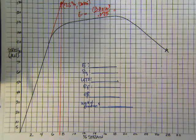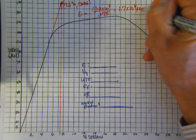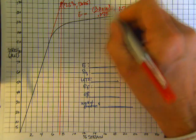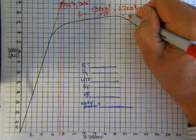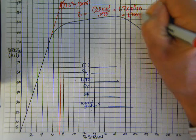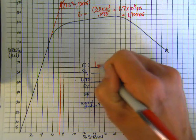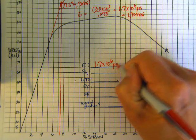And that gives us a value of about 1.7 times 10 to the 6th PSI. Or you could write, if you left this as 130 and left the KSI rather than putting the 10 to the 3 PSI, that would be 1,700 KSI. Either of those is acceptable. So 1.7 times 10 to the 6th PSI.